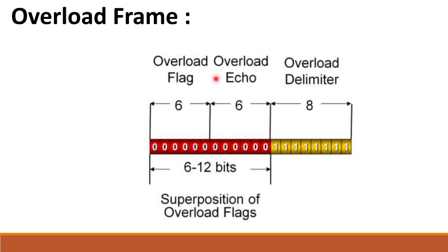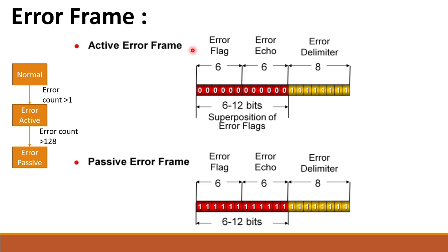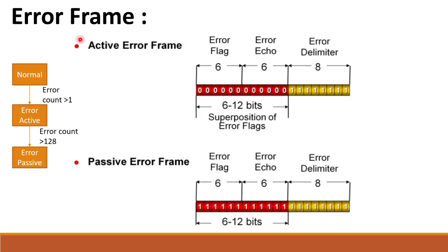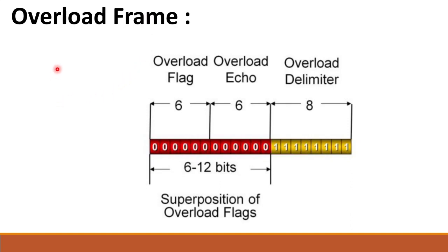The overload frame is represented similarly to the active error frame, with 12 zeros and 8 recessive bits as the overload delimiter. The overload frame is used when a node receives data and needs some processing delay at the protocol level. If the node is busy processing received data, it can send the overload frame to request a delay before the next transmission.